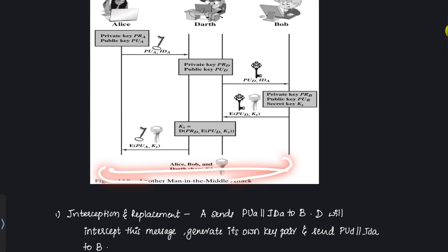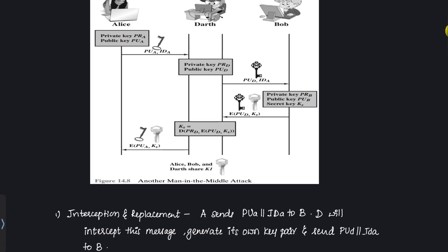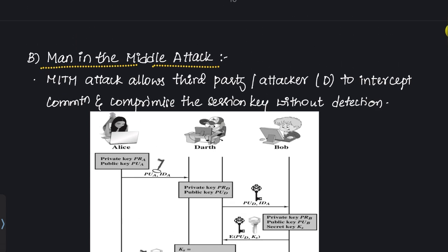Both A and B are sharing messages — A is sharing with D and B is sharing with D — but neither is aware. Dart can now eavesdrop, modify, and inject messages as he desires because he knows both session keys. Both users believe the session key is only shared between themselves, not with Dart. The core of this attack is that Dart intercepts messages and impersonates B to A and A to B, causing them to establish a shared key with D instead of each other. This is very damaging; Dart can gain access not just in this conversation but in future ones as well.